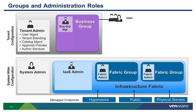Users are the people who will request and manage infrastructure and application resources made available to their group. A support user is a person who can provision and manage on behalf of other users, but does not have the same privileges to author new services that a group manager does. A business group manager can perform some of the functions of the tenant admin, like authoring new services, but the scope of their responsibility is limited to just their group.